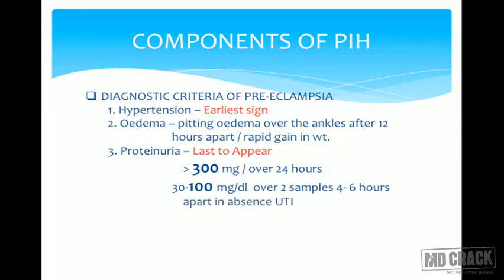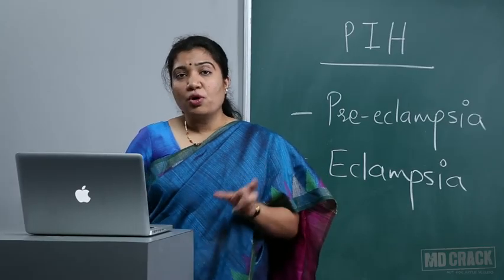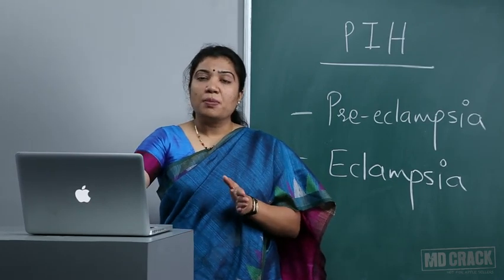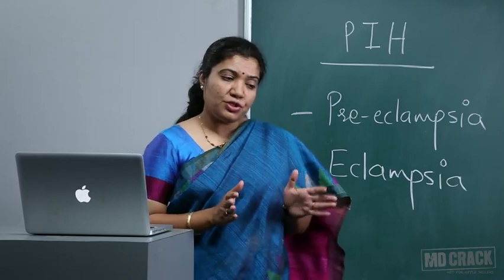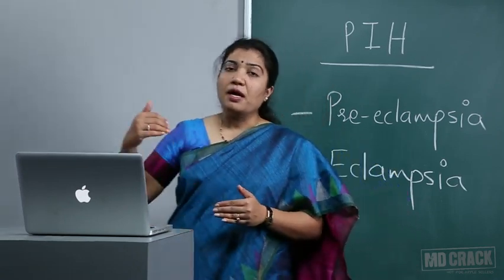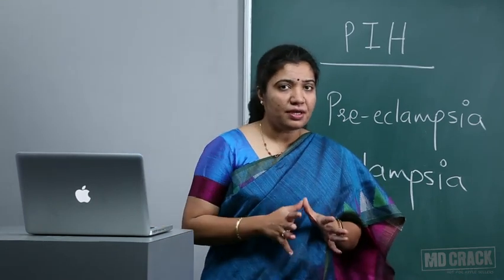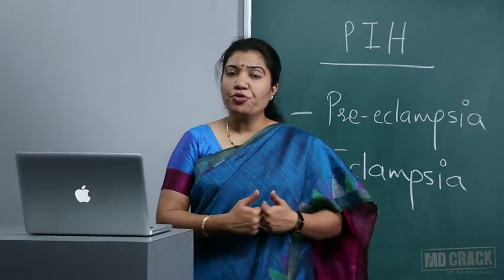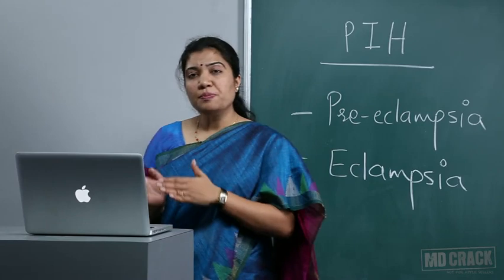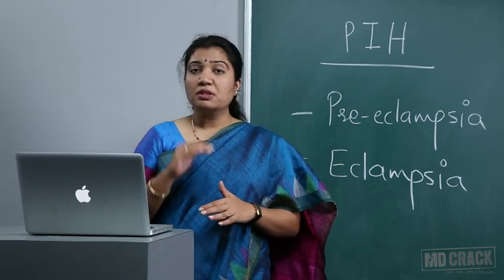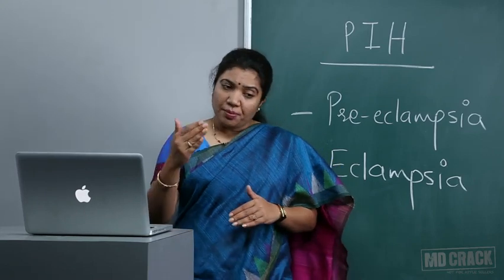Proteinuria is defined as more than 300 mg of protein in a 24-hour urine collection, or 1+ or 2+ on dipstick method in two samples 4 to 6 hours apart in absence of UTI. So the definition has three components: rising blood pressure, edema, and proteinuria. Some books now say edema is no longer a criterion and rapid weight gain is not considered a component of PIH, with more stress on rise in blood pressure plus proteinuria beyond 20 weeks.